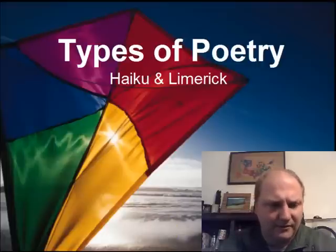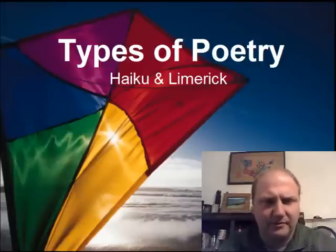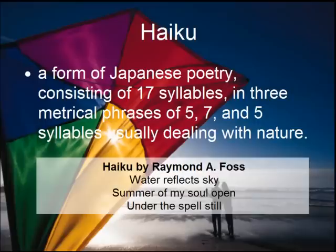So the first two — haiku. Haiku is a form of Japanese poetry that consists of 17 syllables in three lines. The lines are five, seven, five syllables, and they usually deal with nature.